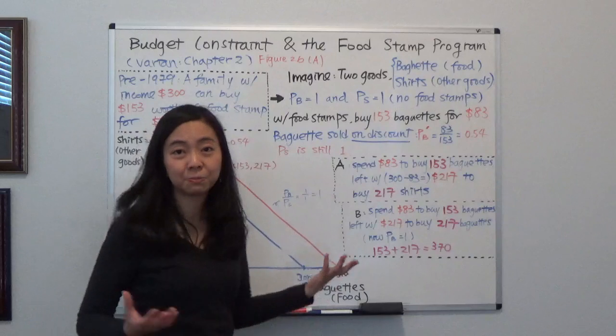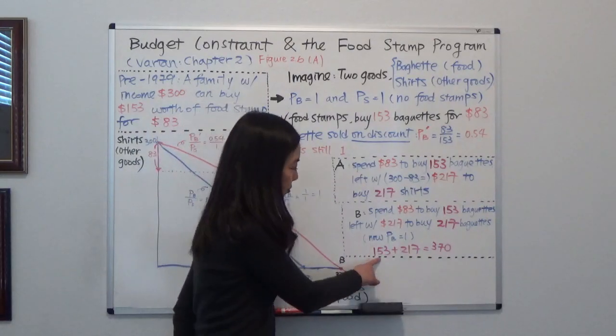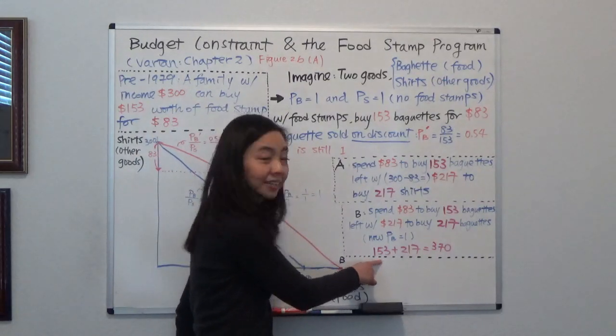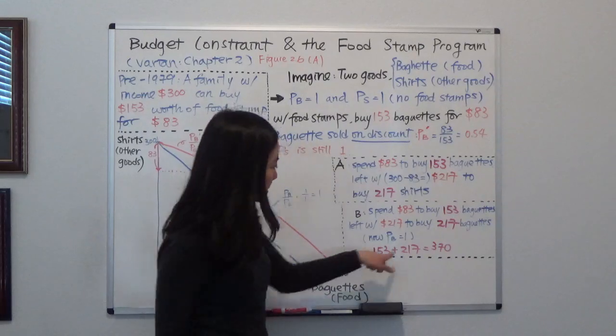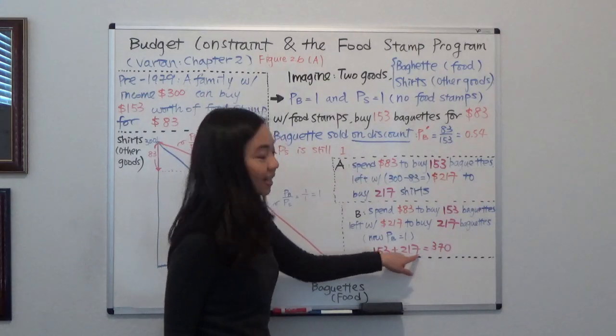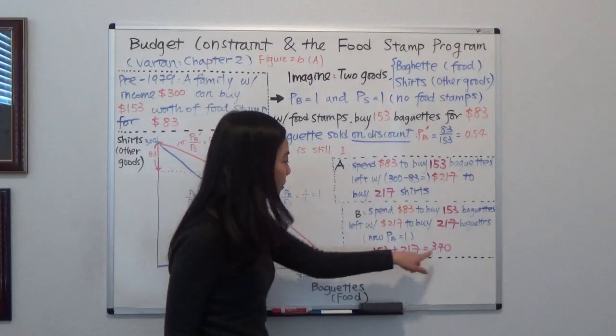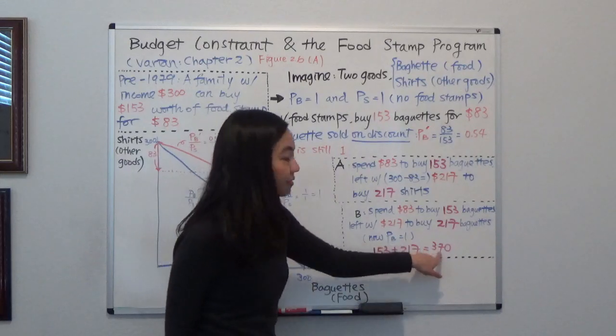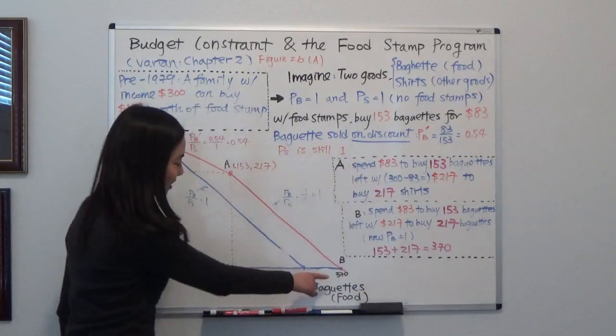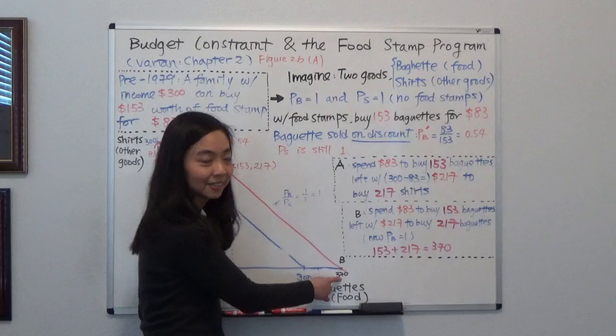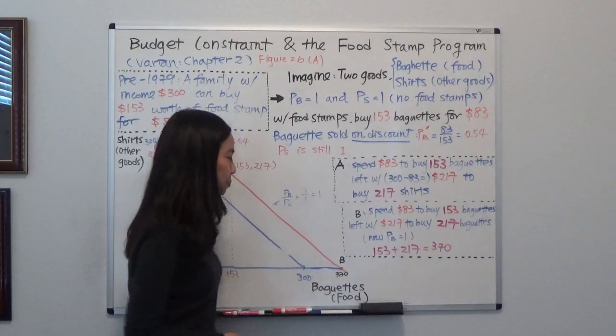So together, how many baguettes did you buy? There will be 153 baguettes that's on discount plus 217 baguettes that's not on discount. So together, you bought 370 baguettes. That's the intercept here. Point B, that's if you spend all the resources to buy baguettes.